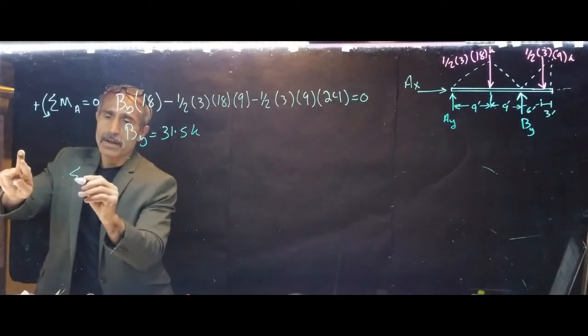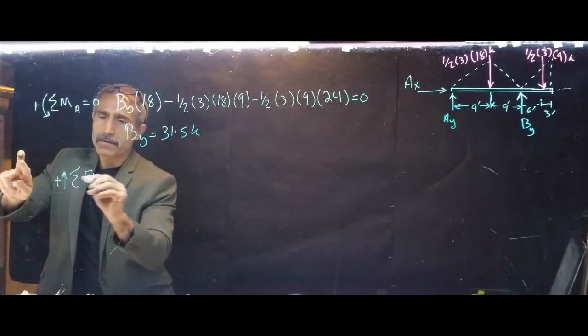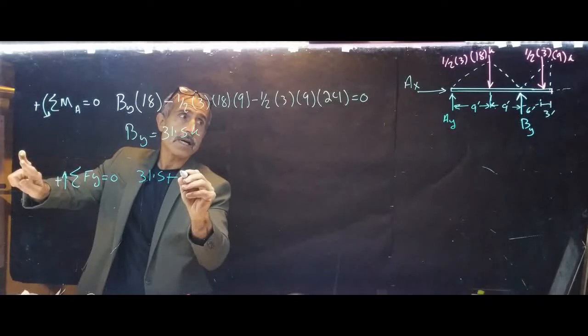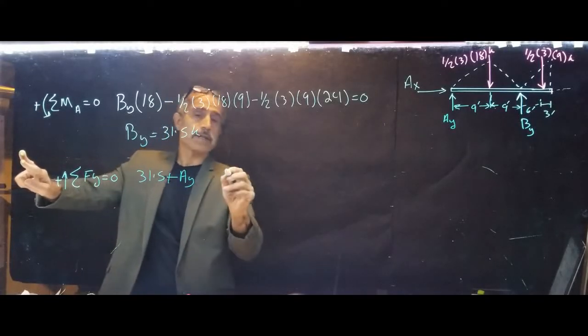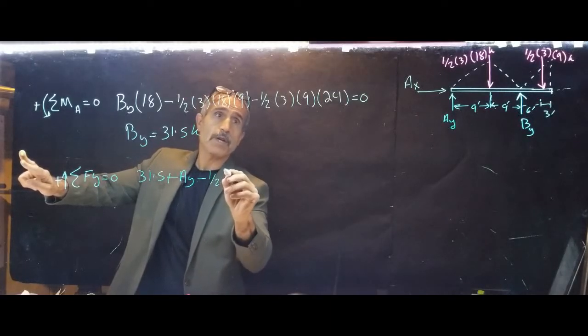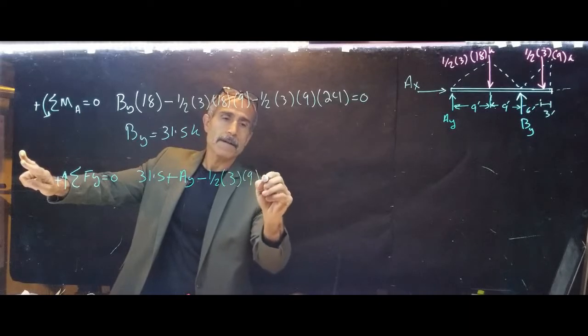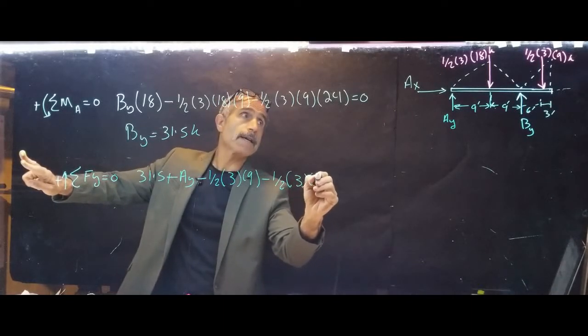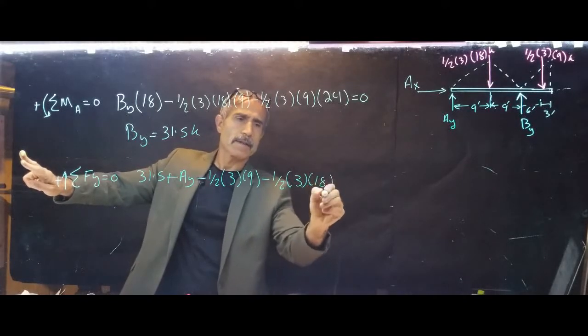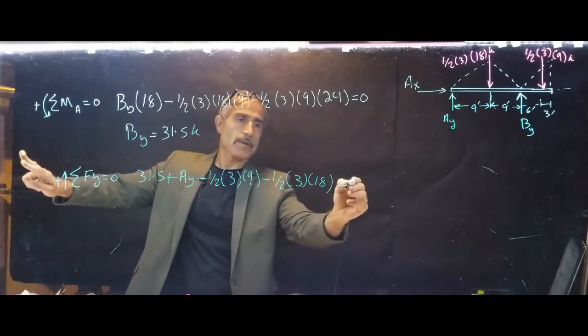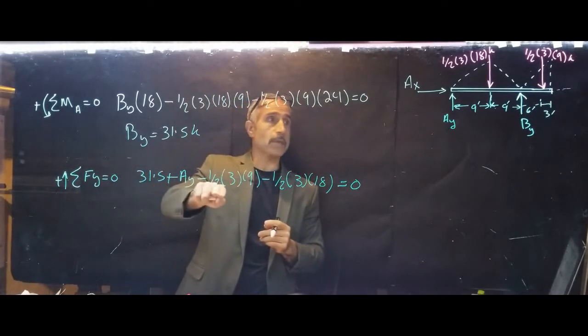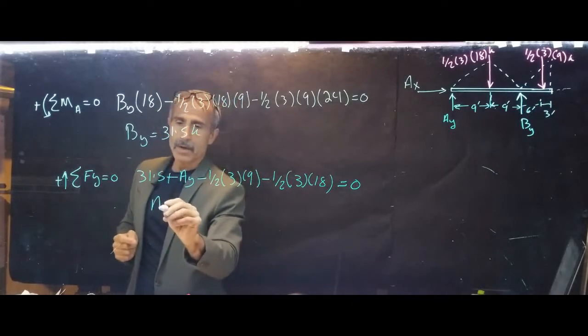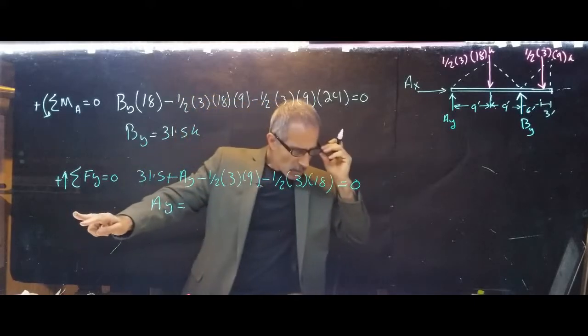So let's do summation Fy equals zero. Going up is positive. We have 31.5 plus Ay, and then minus the other two forces: minus one half times 3 times 9 plus minus one half times 3 times 18. One half times 3 times 18, one half times 3 times 9 equals zero. That comes out to Ay. Ay comes out to 9 kips.